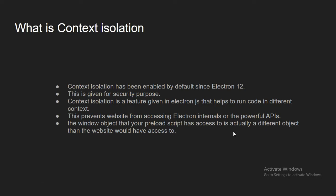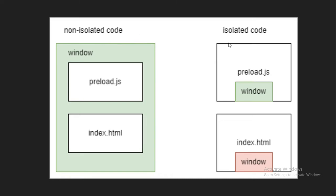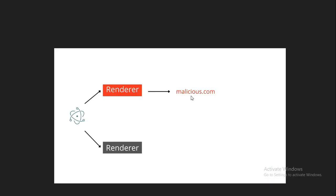With context isolation, the window object of one script is completely different from the window object of another script. Looking at a diagram, on the left-hand side we have non-isolated code and on the right-hand side we have isolated code. We have two different scripts: our preload script and a script written inside index.html. If context isolation is disabled, the window object of the preload script and index.html will be common, so whatever APIs are accessible to the preload script will also be accessible to index.html.